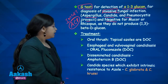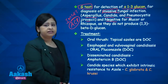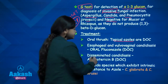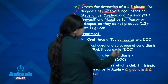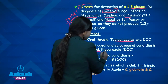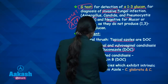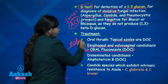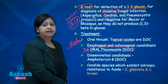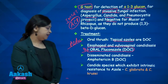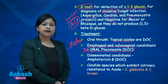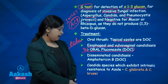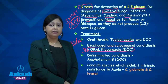Coming to treatment: for oral thrush, the commonest infection, topical azoles are the drug of choice. For esophageal candidiasis and vulvovaginitis, oral fluconazole is the drug of choice. Azoles are the mainstay of treatment except in cases of disseminated candidiasis, when amphotericin B is given. Two Candida species which exhibit intrinsic resistance to azoles are Candida glabrata and Candida krusei.